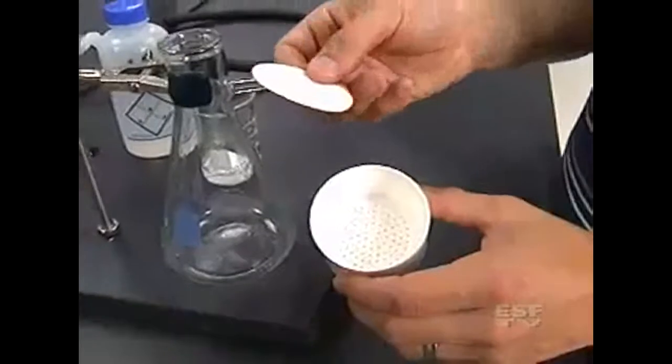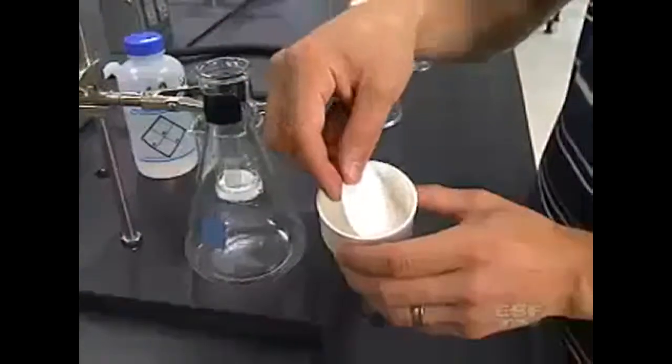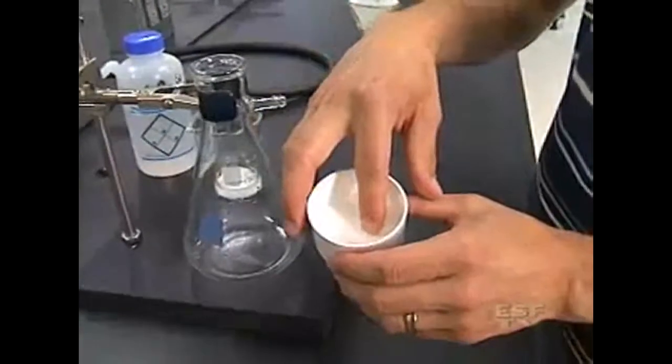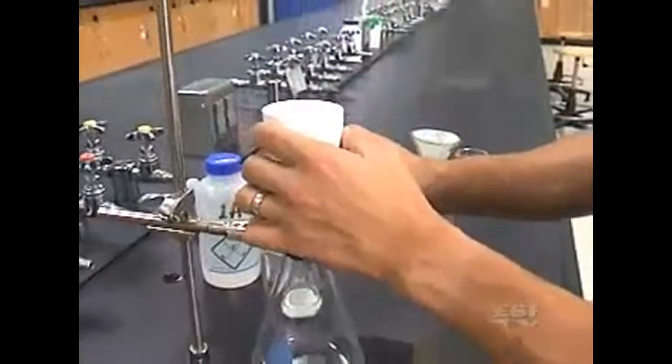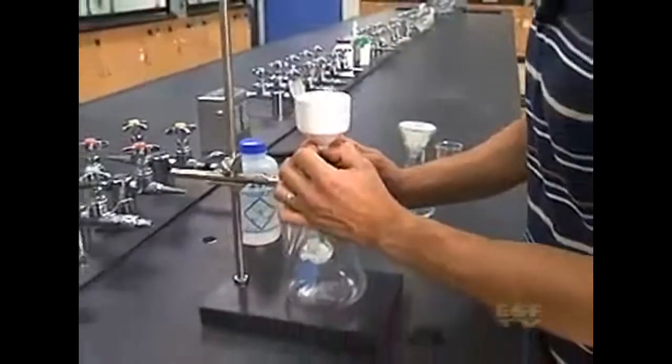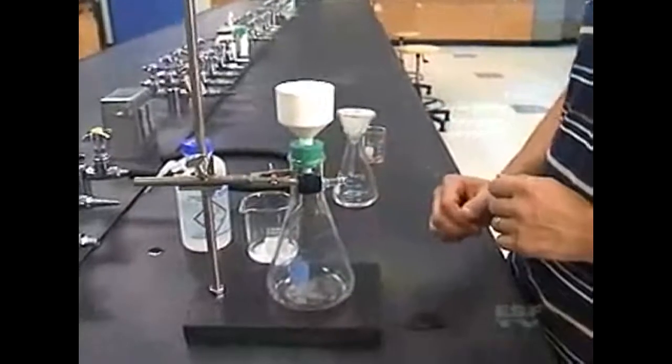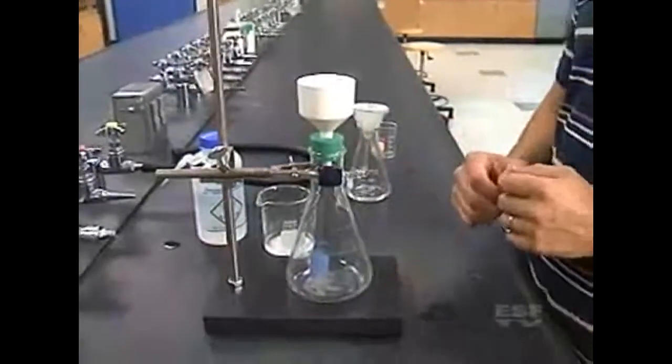And then we have a piece of filter paper which we're just going to stick on top of the filter. We don't need to fold it in this instance. So I'm going to put my filter funnel and filter together onto the filter flask, and now I need to connect it to my vacuum line.